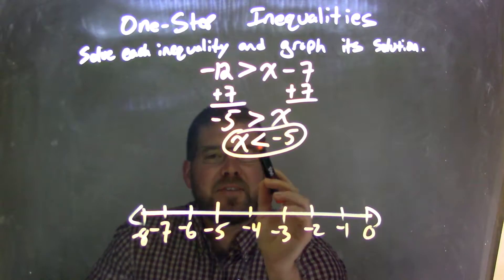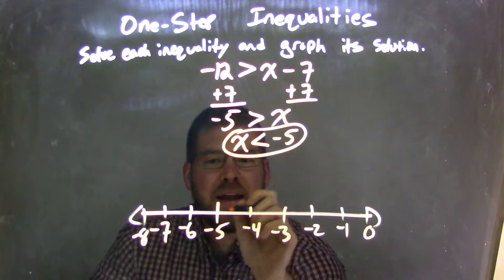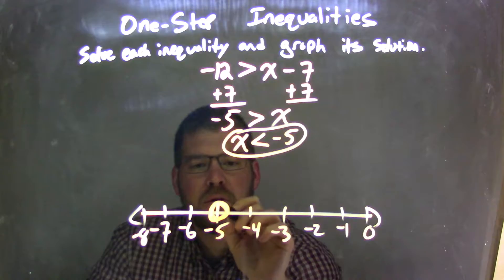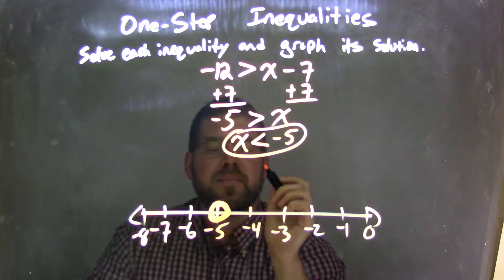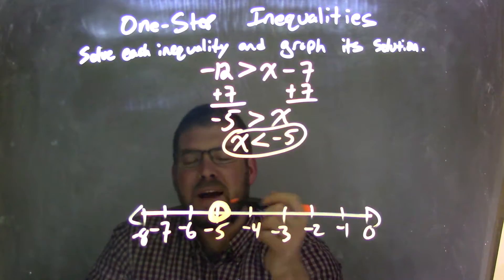Well, x right there, x is less than, meaning less than negative 5. At negative 5, we have an open circle. We do an open circle there at negative 5, and then it says it's less than.